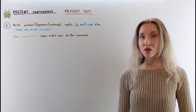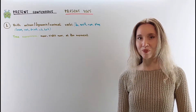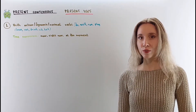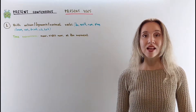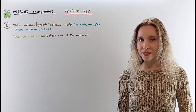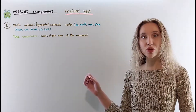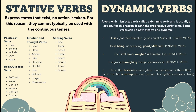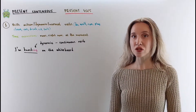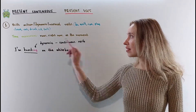Use the present continuous with dynamic, normal, action verbs for things that are happening at the moment of speaking. These things usually last for some time. Dynamic verbs are also called action or normal verbs — for example: do, walk, run, play, clean. Dynamic verbs can be used in continuous tenses and describe actions that you see someone doing. For example, I'm knocking on the whiteboard — knock is a dynamic verb and can be used in continuous tenses.